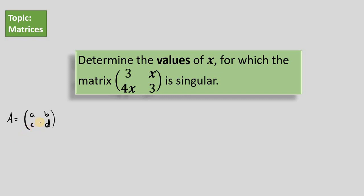If I want to find the determinant of a matrix, what I need to do is multiply the first component A by the last component. This symbol with the 2 vertical strokes to the left and the right of A means the determinant of A. To find the determinant of A, we multiply A times D, and we subtract the product of B times C.